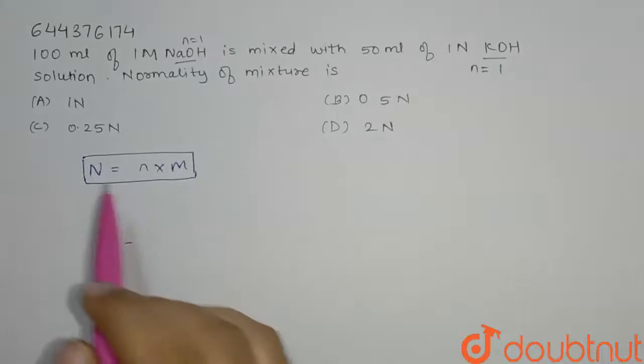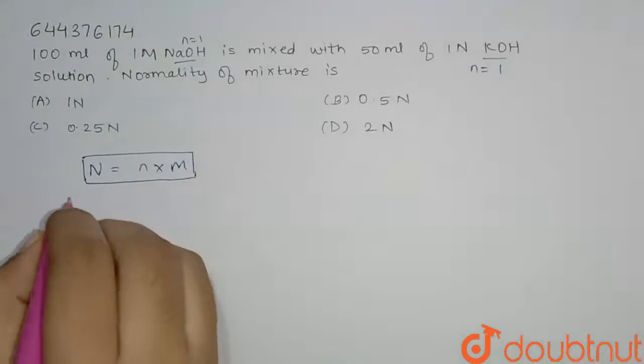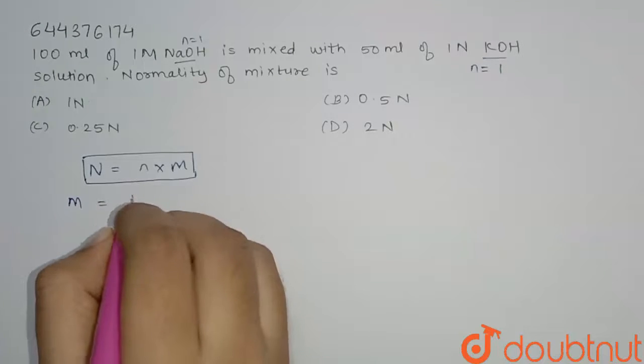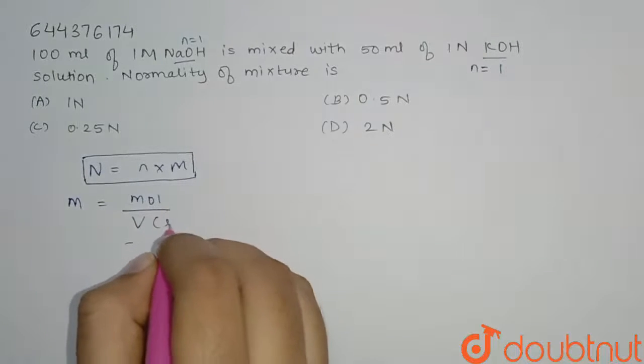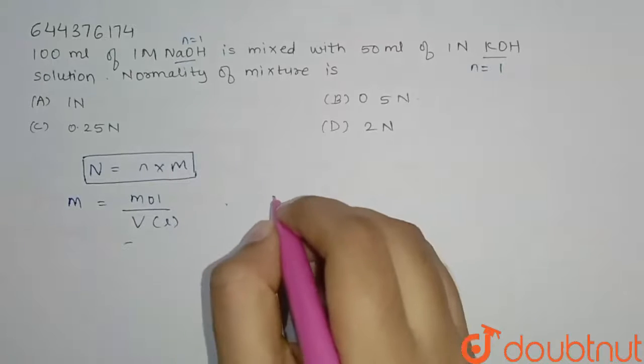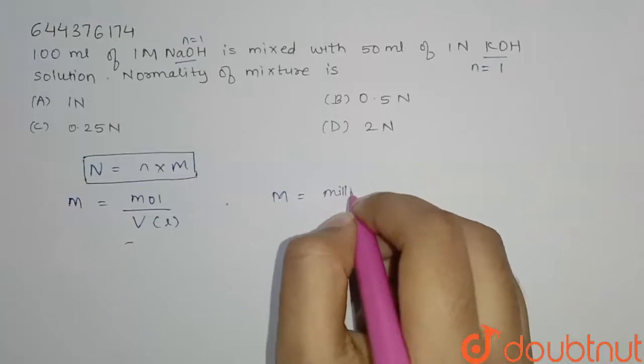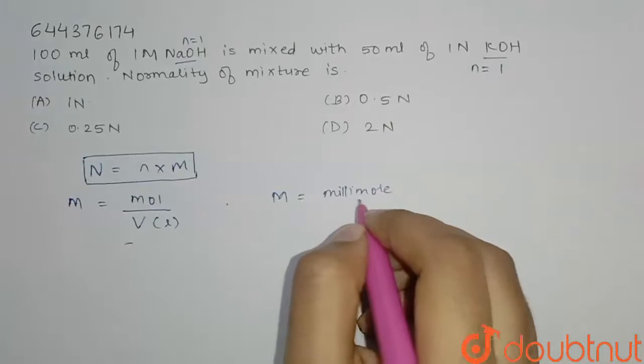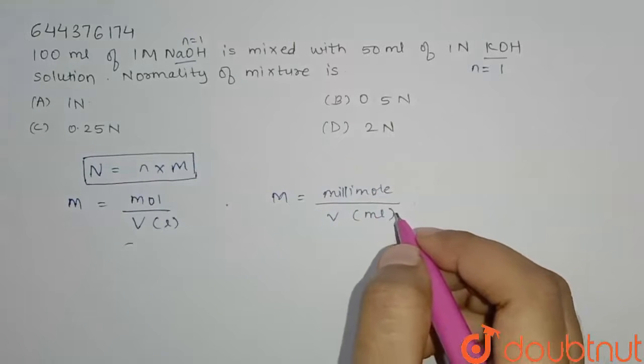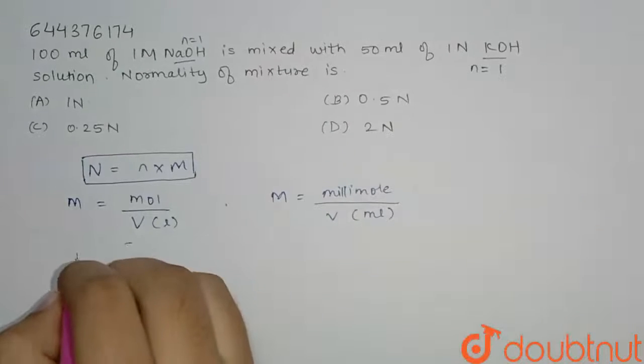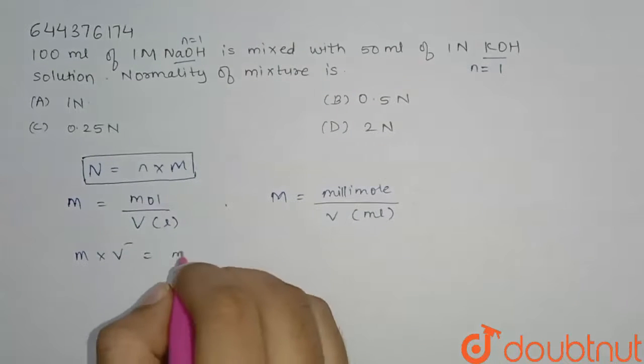So our answer for normality will be the answer for molarity. So let us find molarity. Formula for molarity is mol upon volume in liter, and also it can be found by millimole upon volume in milliliter. That means M times V in milliliter equals millimole.